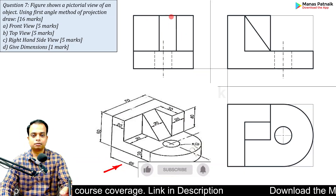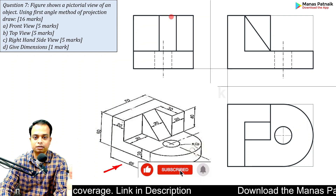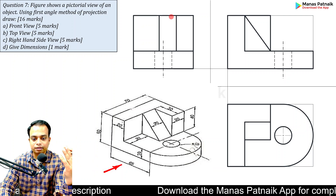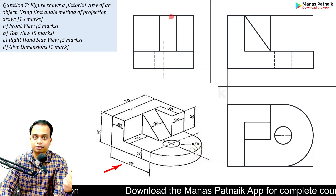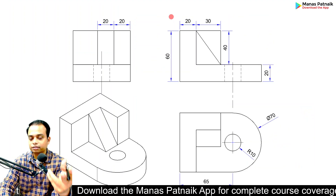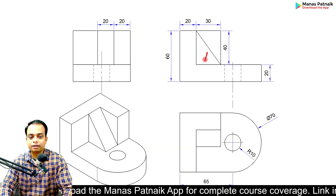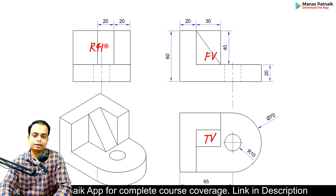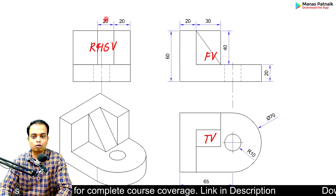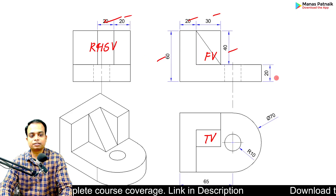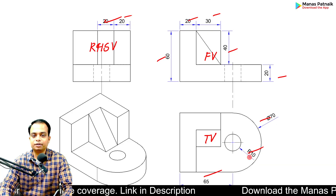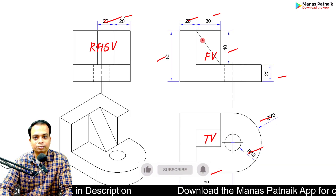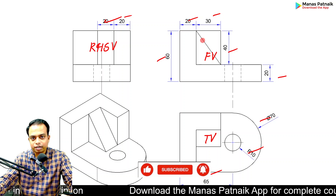The problem is done — nothing is left. Everything has been created: visible edges are shown with solid lines and hidden features are represented by dashed lines. Once you add dimensions, this is your final drawing showing the front view, top view, and right-hand side view, along with a total of ten dimensions.